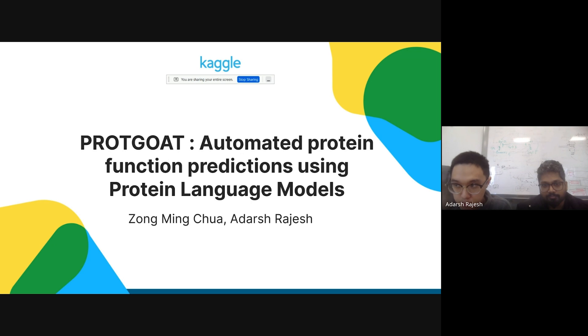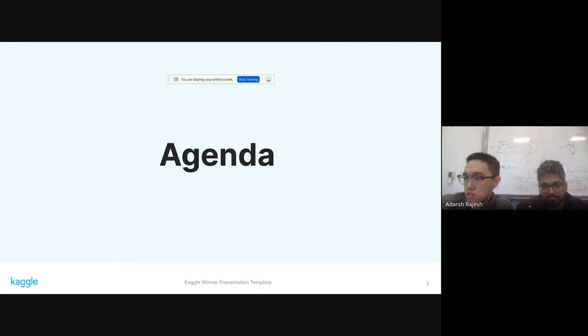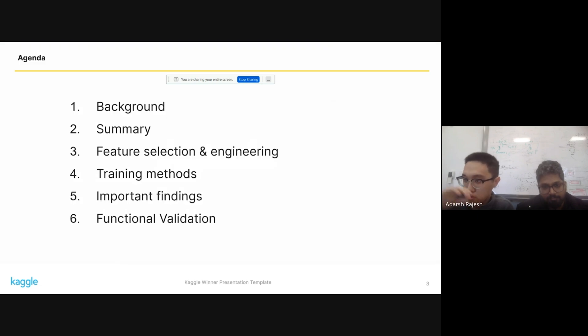Today we're going to talk about the model, our final model, that we generated for Cover 5. So to start with, we're going to go through these different topics. One of the differences that we have done compared to the other presentations today is we have done a little bit of functional validation at the very end. Hopefully this is a different perspective and a different way to validate the solution that we have engineered for this problem.